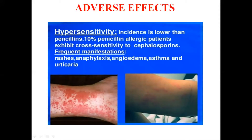Hypersensitivity reaction is the most important adverse effect of cephalosporins. The incidence is lower than penicillin, and 10% of penicillin-allergic patients exhibit cross-sensitivity to cephalosporins. If there is a history of an immediate-type reaction to penicillin, cephalosporins should not be given. The frequent manifestations are rashes, which is the most common, and anaphylaxis, angioedema, asthma, and urticaria can also occur. Skin tests for sensitivity to cephalosporins are unreliable.